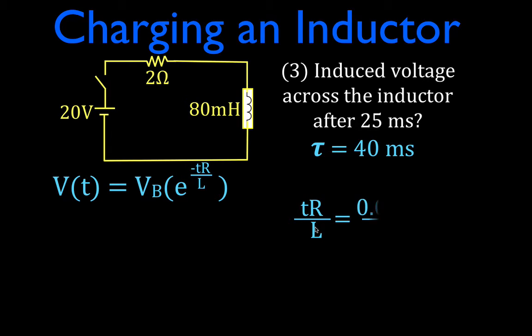TRL, that is time is 25, 0.025 milliseconds, which is 0.025 seconds times 2 divided by 0.08, the inductance of the inductor. We have our base units, seconds and henrys. If we do that, we get 0.625.